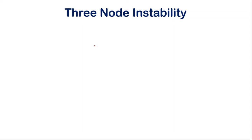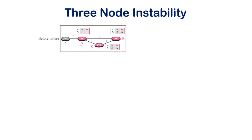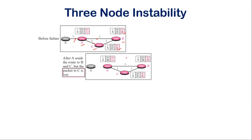Now let us look at the three-node instability problem. We have three routers A, B, and C. The distance from node A to X is 1, from node C to X is 2, and from node B to X is also 2. The next hop for both B and C is A. If the link between node X and A breaks, the distance from A to X is set as infinity, meaning there is no available path.